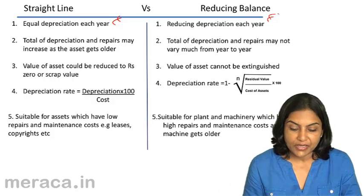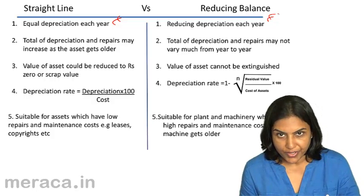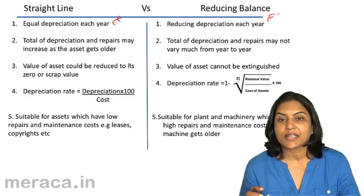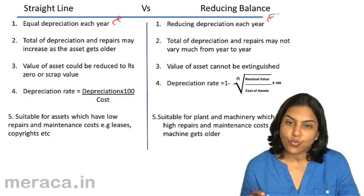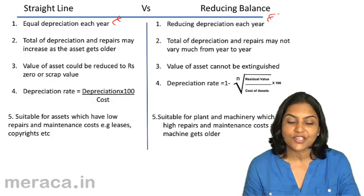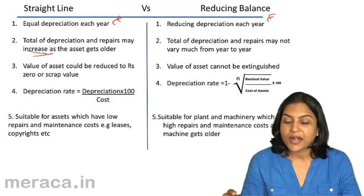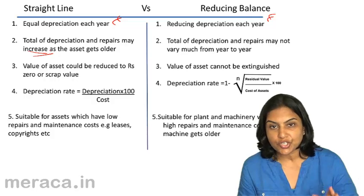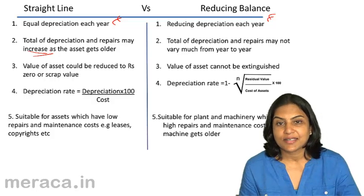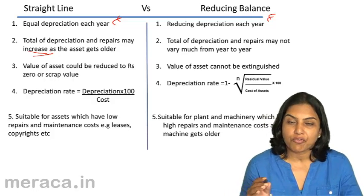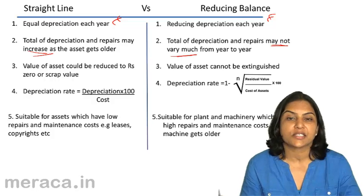However, under the straight line method, the total of depreciation and repairs may increase as the asset gets older, if repairs get higher as an asset grows older. Under the reducing balance method, since the amount of depreciation goes down while repairs go up, it is quite likely that the variation in the total of repairs and depreciation may not vary much — it may be more or less uniform.